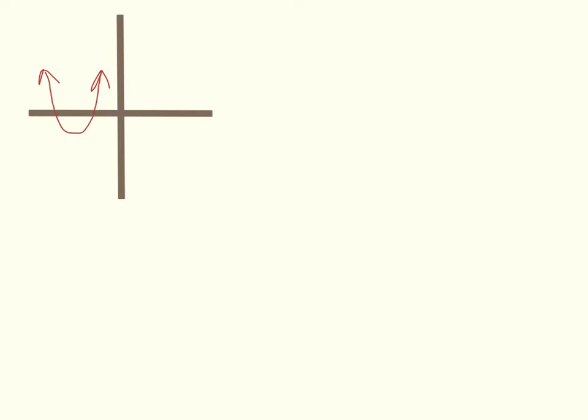So when we solve quadratic equations by factoring or completing the square, like we have been, we are finding where a parabola crosses the x-axis. However, sometimes our parabolas don't cross the x-axis. So up until now, when we solve these, we've been saying no solution. But they do have solutions — they're just imaginary.